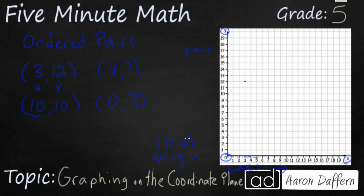So with 10 comma 10, we're going to go over 10 first. You always go over first. So you go over 10 right here, then we're going to go up to 10, and then we're going to get our point.